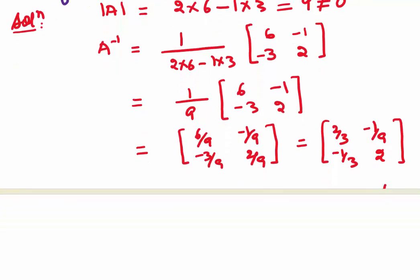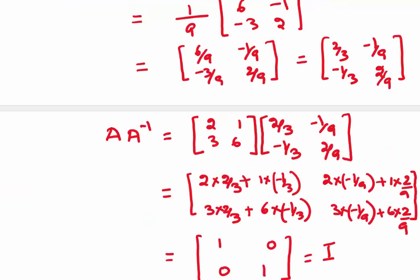This is A⁻¹. If you want to check whether your calculations are correct, multiply A and A⁻¹. Do you get the identity matrix? Let's do that. A = [2, 1; 3, 6] and A⁻¹ = [2/3, −1/9; −1/3, 2/9]. Multiplying the two matrices, we get the product as I, which means the inverse we found is correct.